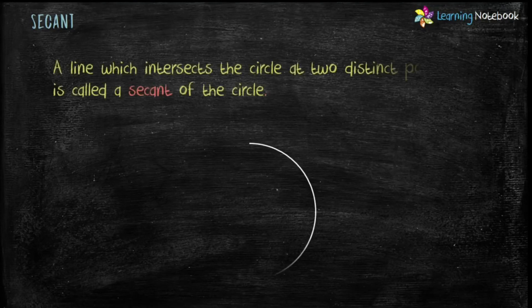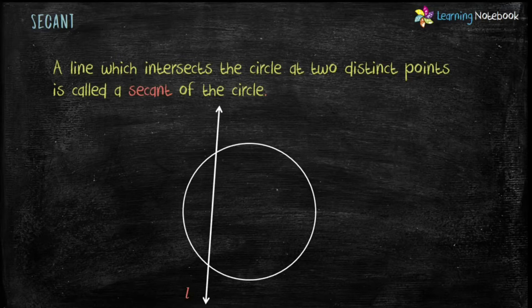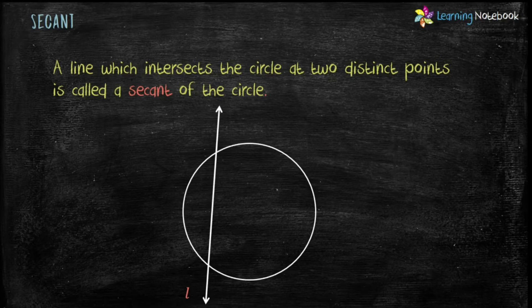A line which intersects the circle at two distinct points is called a secant of the circle. Like here, line L is intersecting the circle at two distinct points. So, L is secant of the circle. Students, we will study more about secant in higher classes.